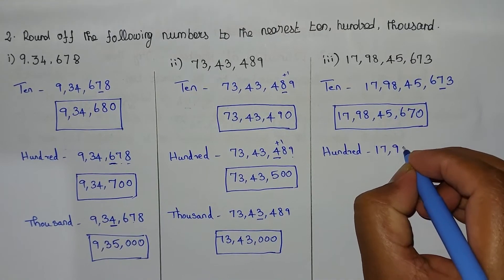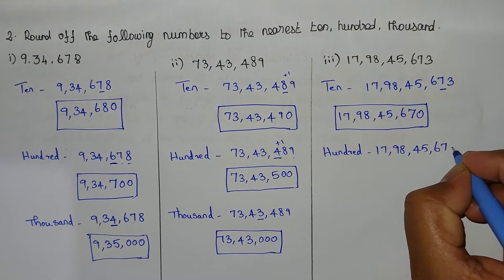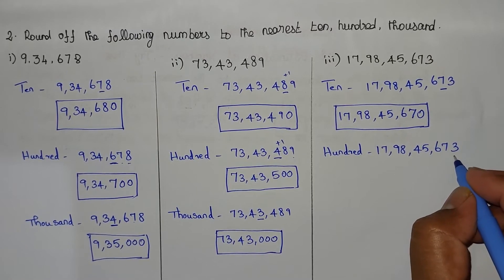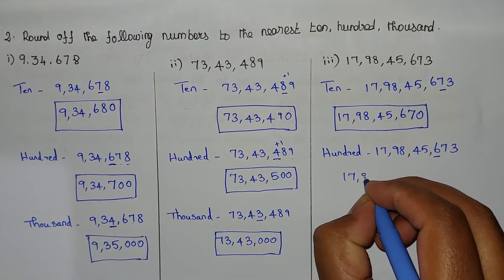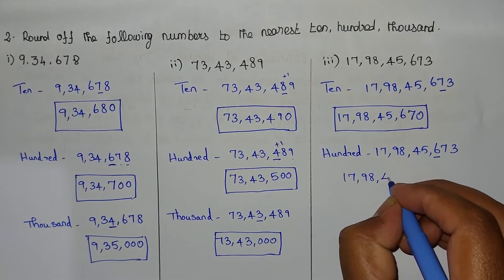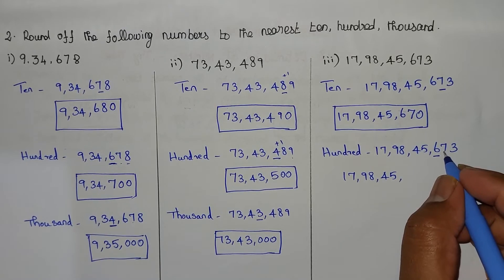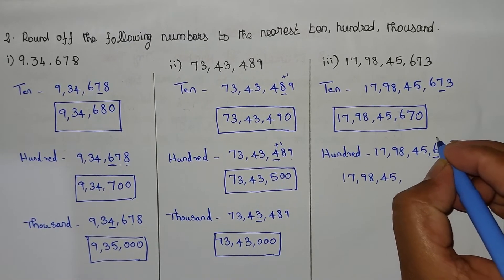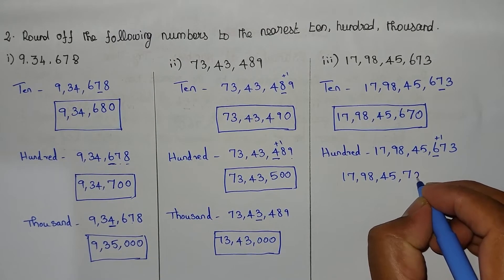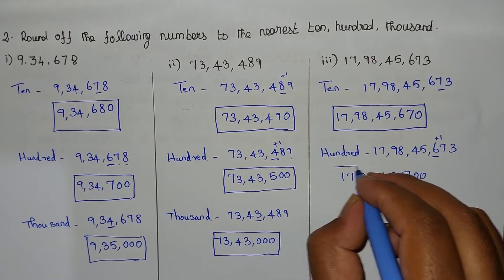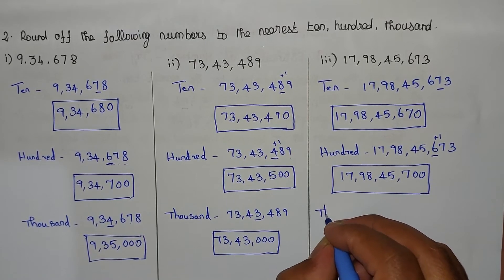The number is 17,98,45,673. For the 100s place: ones is 3, tens is 7, hundreds is 6. The right-hand side digit is 7, which is greater than 5. So 6 plus 1 equals 7. The two digits to the right become 0. The answer for 100 is 17,98,45,700.